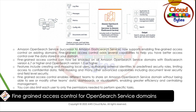Features include creating and mapping local users, authorizing external identities to predefined security roles, limiting access to confidential data field masking, and many other advanced capabilities including document level security and field level security. Fine-grained access control enables different teams to share an Amazon OpenSearch service domain without being able to see or modify other teams' data, dashboards, or visualizations, enabling greater efficiency and centralizing management. You can also limit each user to only the permissions needed to perform specific tasks.